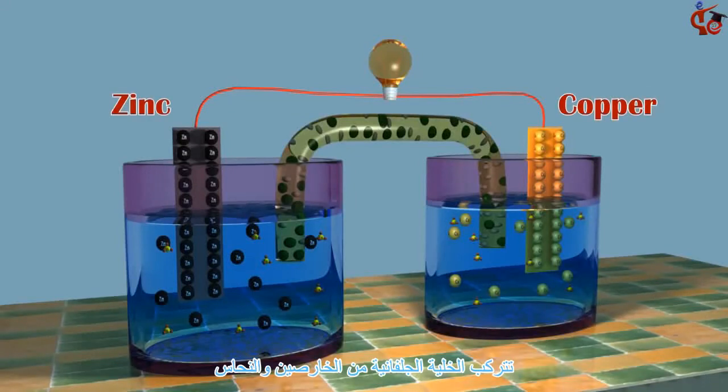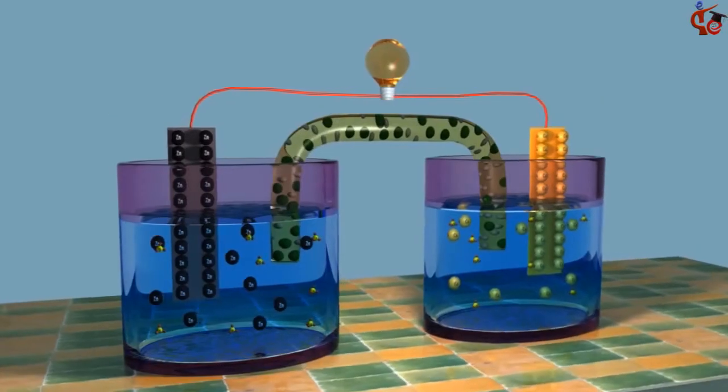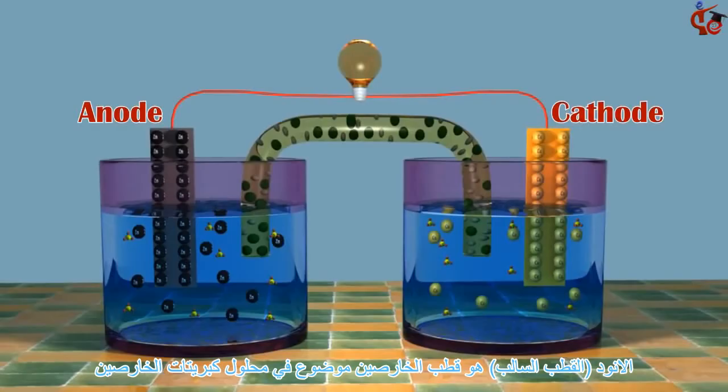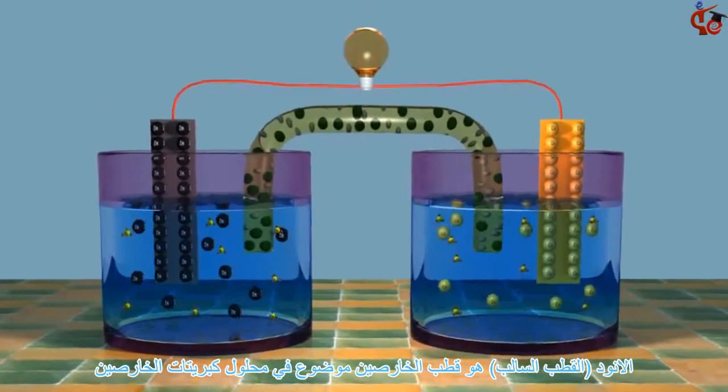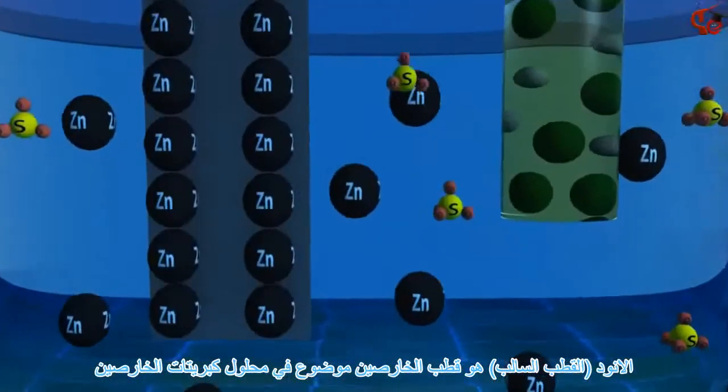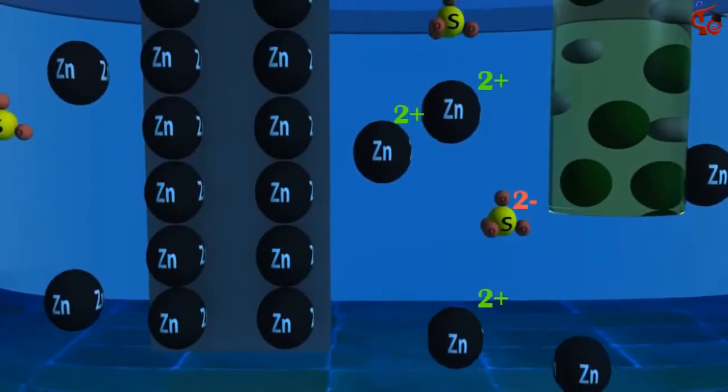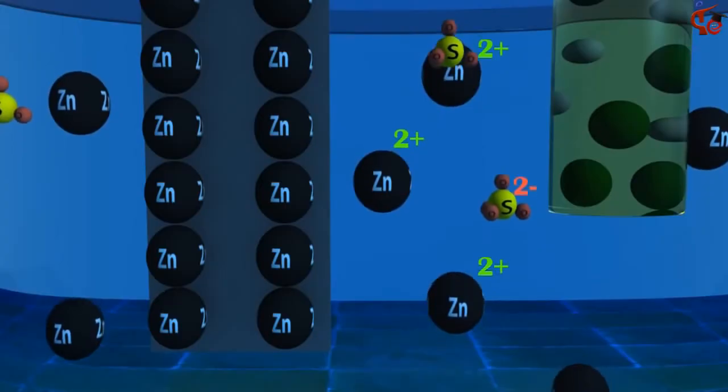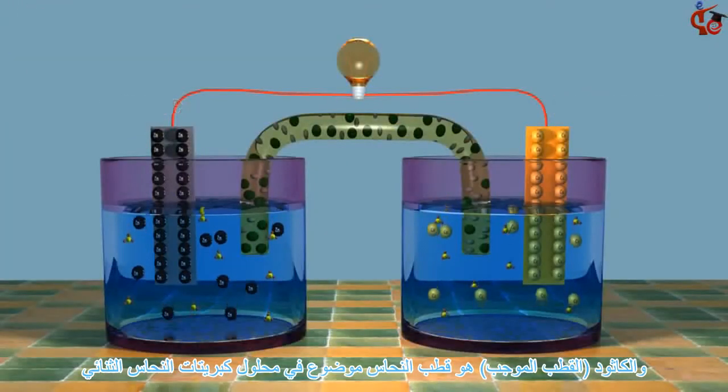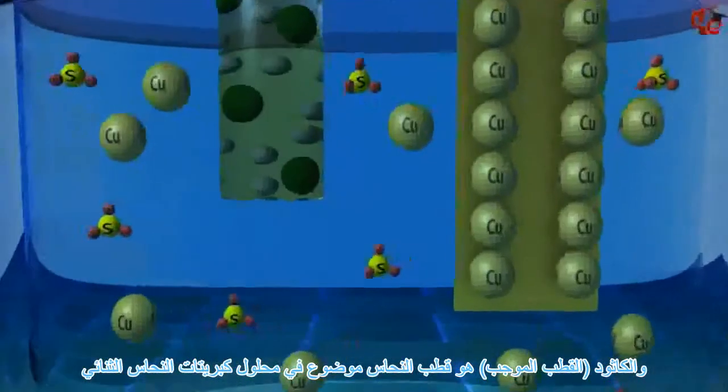A useful galvanic cell can be constructed by using zinc and copper. The anode is a zinc bar placed into a zinc sulfate solution, and the cathode is a copper bar placed into a copper sulfate solution.